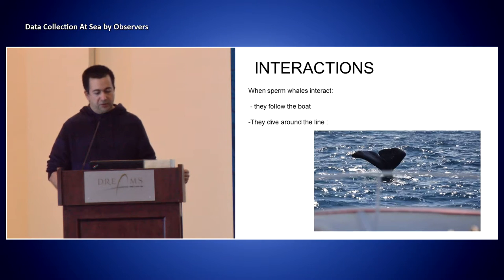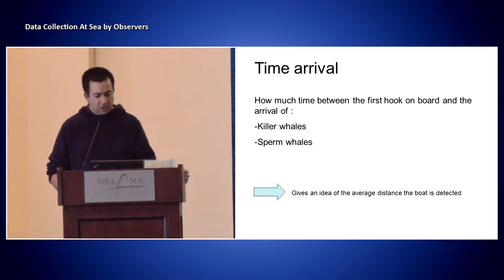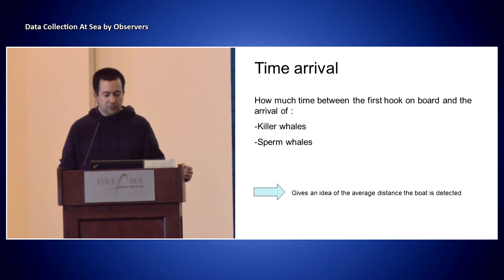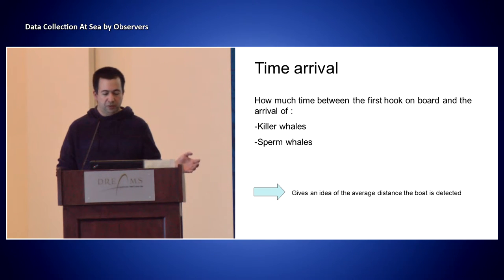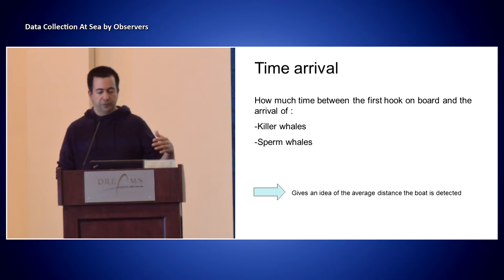Sperm whales are not as easy to assess. They do follow the boat actively and dive around the line, but after that we don't really know what happens — they don't leave any clues on the line. We also collect the time of arrival. It's important to know if the whales arrive just as the first hook is hauled on board, and it gives an idea of whether they were following the boat or, if they arrive an hour later, the detection distance they have from the vessel.